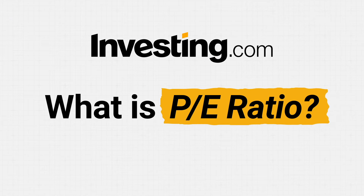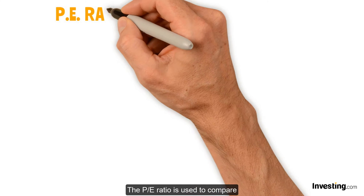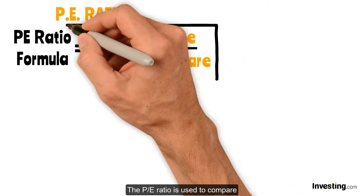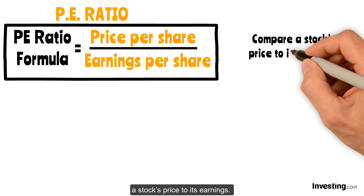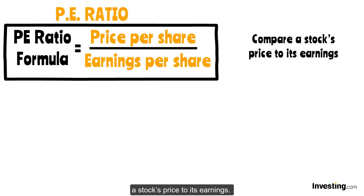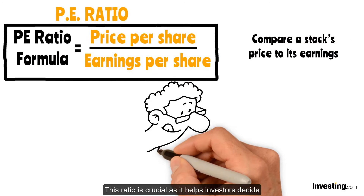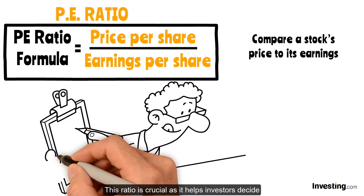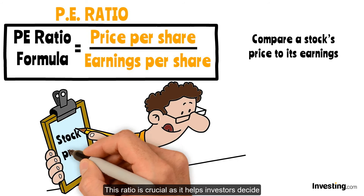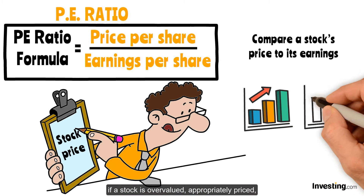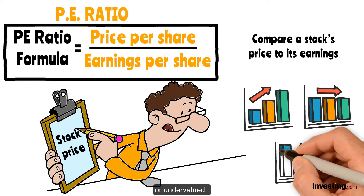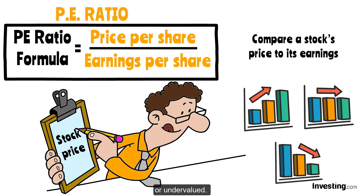What is the P/E Ratio? The P/E Ratio is used to compare a stock's price to its earnings. This ratio is crucial as it helps investors decide if a stock is overvalued, appropriately priced, or undervalued.